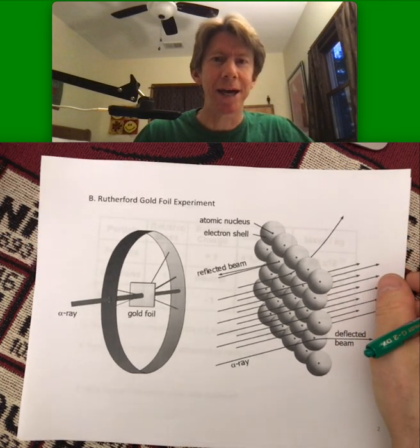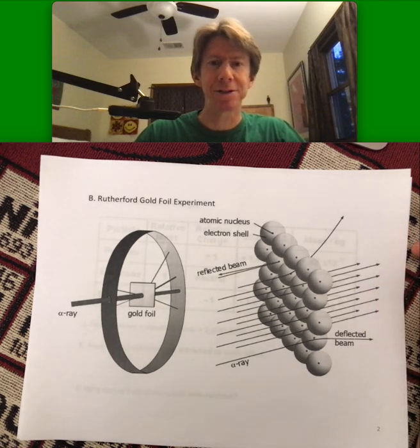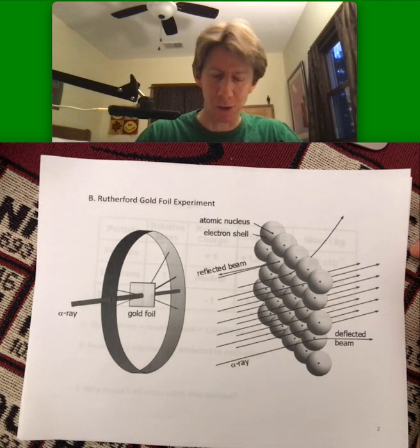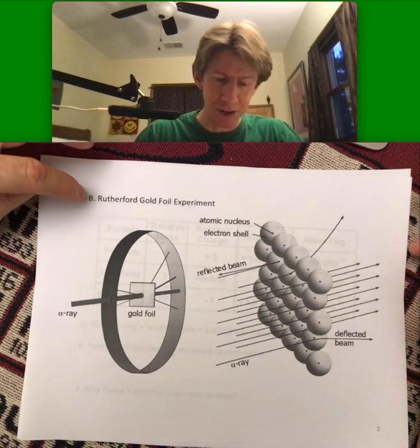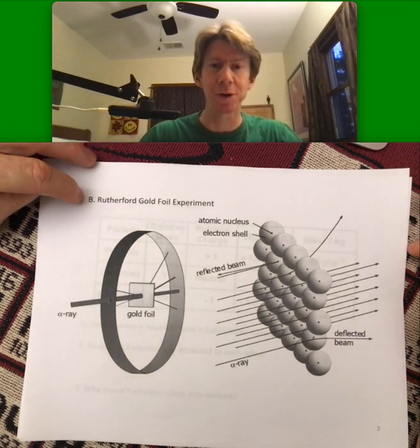Now, how do they know that? Well, we're going to skip right to the actual theory of the atom that currently holds. And that was largely discovered, or one of the main pieces of evidence was from the Rutherford gold foil experiment.